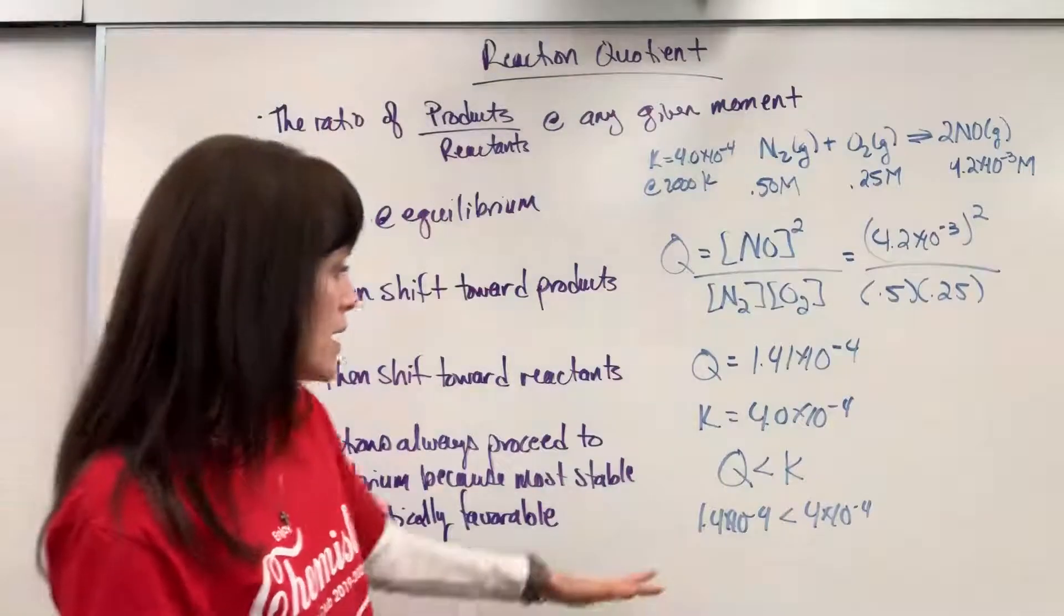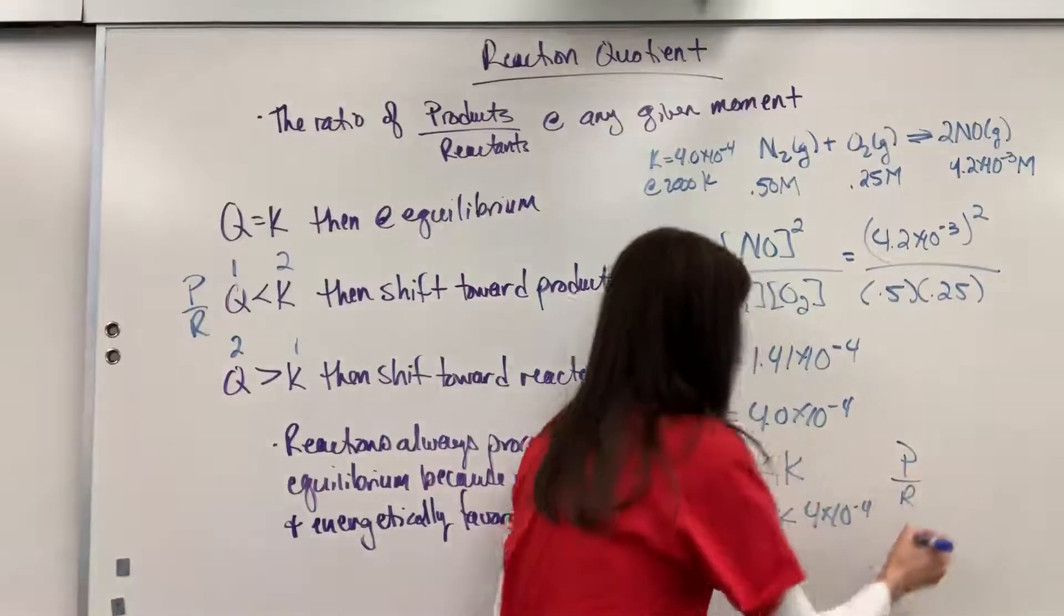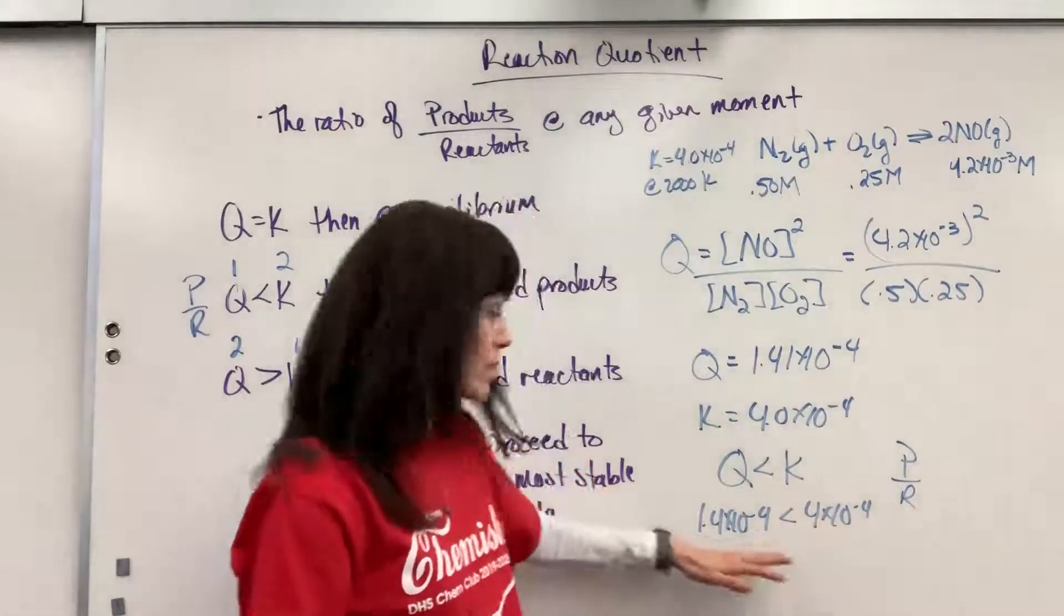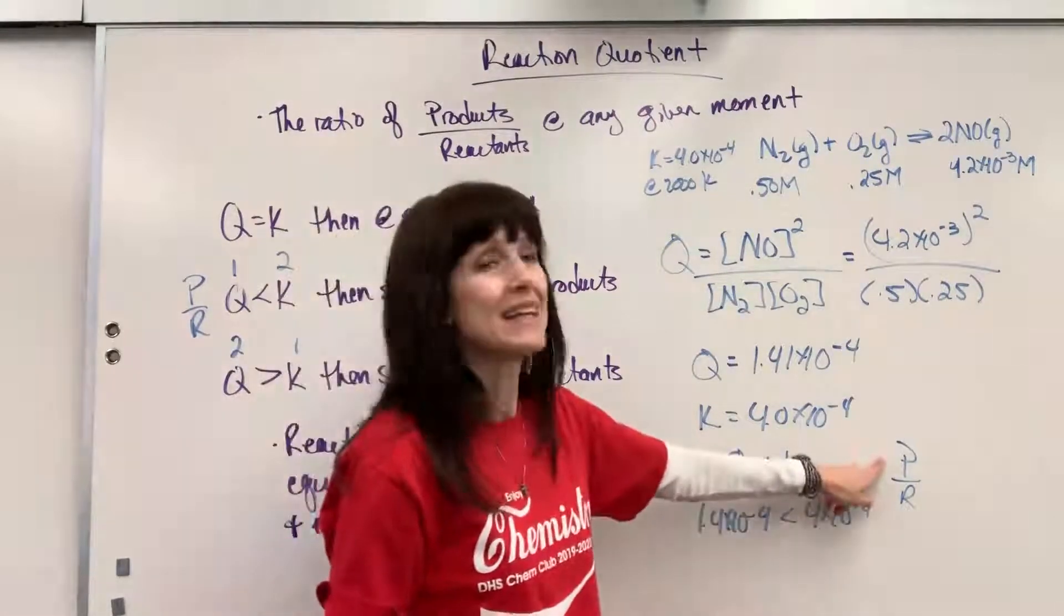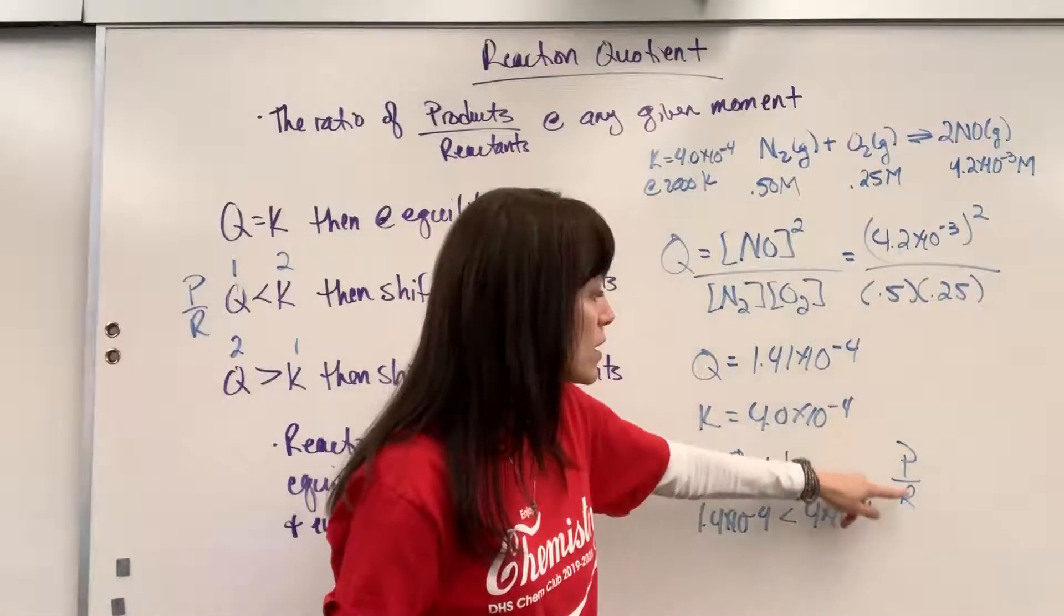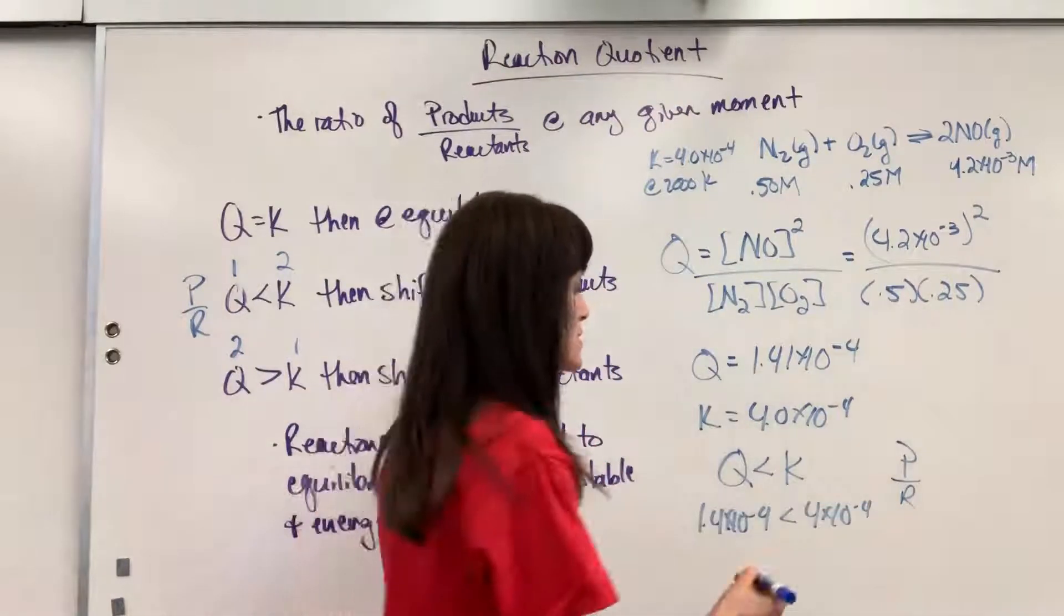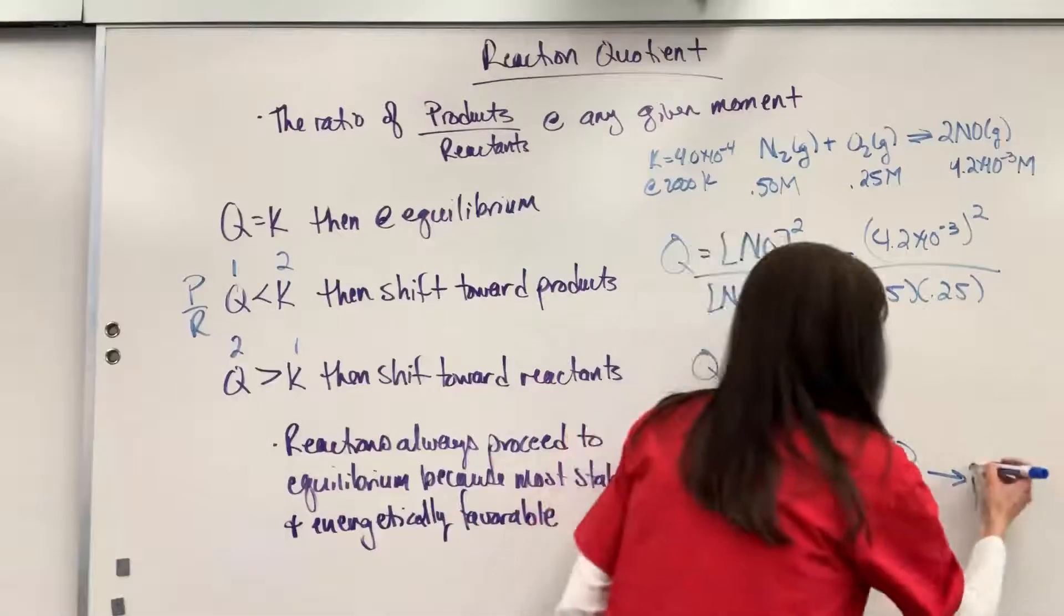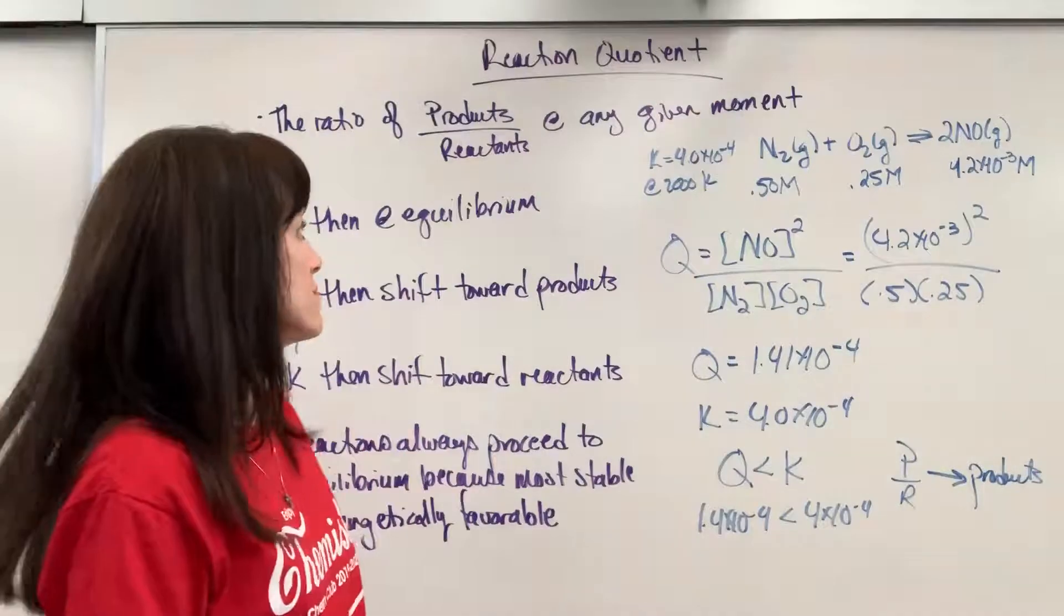So this is going to proceed to the products. Let's think this out. This number is small. That number is bigger. And I'm thinking, products and reactants. I need this to get to a bigger number. This has got to grow. We need a bigger number than that 1.4. How can I get a bigger number? I need more products. I need more in the numerator, less in the denominator, and that quotient will get bigger. So this is going to proceed to the products. And then it will reach equilibrium.